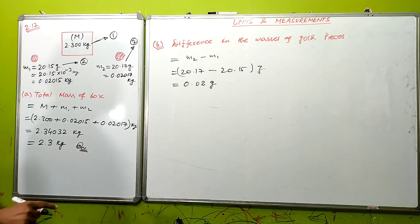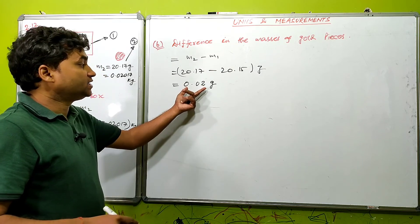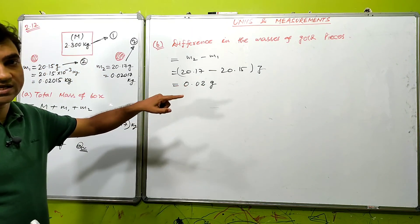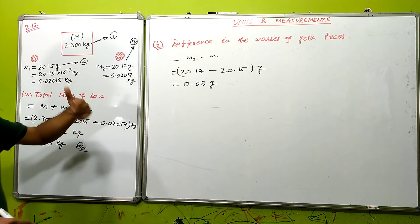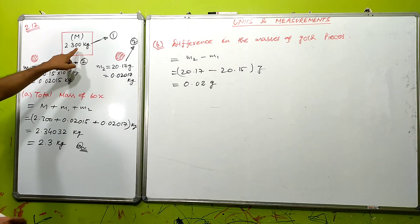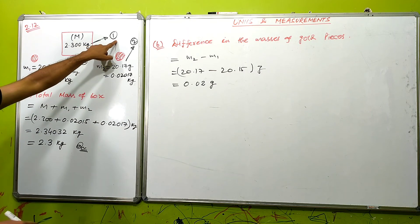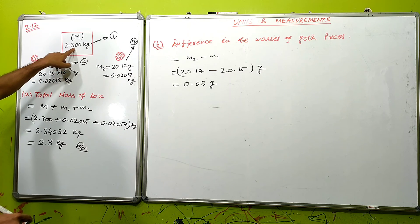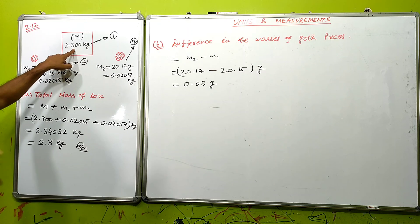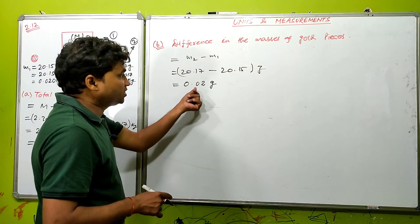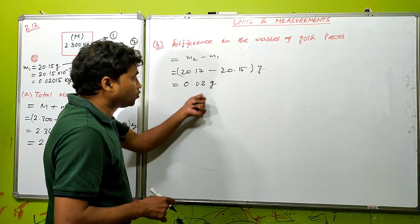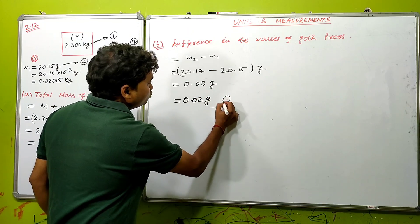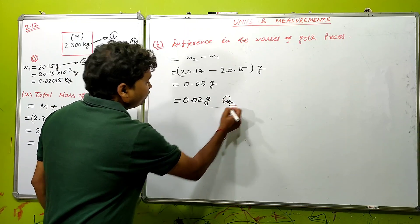Now for the significant figures in Part B, we look at decimal places again. Both 20.17 and 20.15 have 2 decimal places, so we look at the decimal place of the result. The non-zero digit appears at 2 decimal places, so the final answer is 0.02 g.